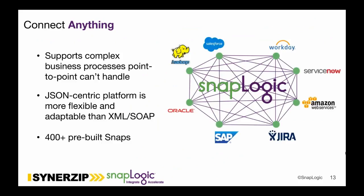SnapLogic breaks its offering into three areas: being able to connect anything, anytime, anywhere. You can see the cloud-based interface where you build and manage pipelines. The execution of these pipelines can occur on-prem, in the cloud, or in a very hybrid way. When we say 'anything,' your integration technology has to support complex business processes that point-to-point tools can't handle. The SnapLogic platform is JSON-centric — everything that flows through our pipelines is a JSON document. It's streaming and well suited for more modern data types — the three Vs of variety, velocity, and volume.